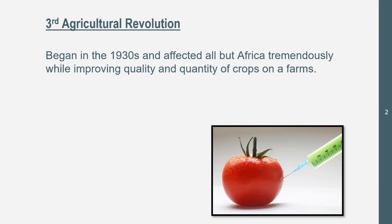So it began in the 1930s — pretty contemporary, as you can see. And yeah, everyone but Africa — sorry, Africa, you're left out. This improved the quality, so how juicy the fruits and veggies were, and the quantity — having more rice, more wheat, more kernels on the corn.